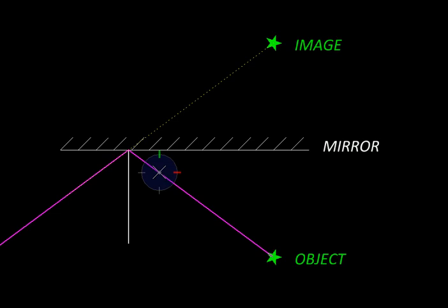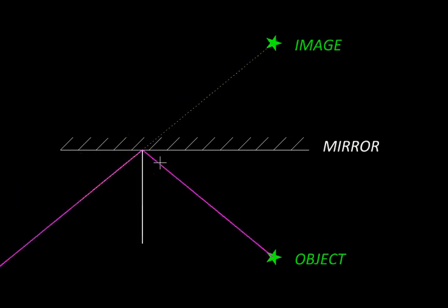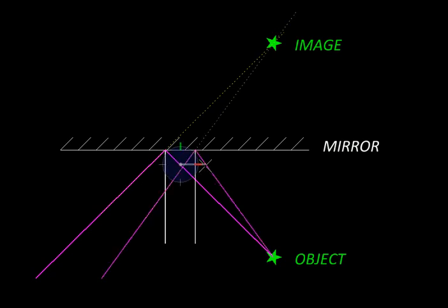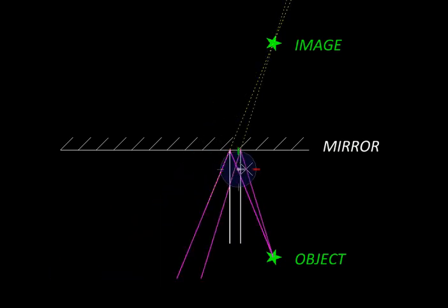But in all these cases you would notice the extension of the reflected ray is always passing through the image. So the image is not going anywhere. The image will stay where it was, and therefore the observation that we had that the distance of image and object are the same from the mirror, it still holds good.